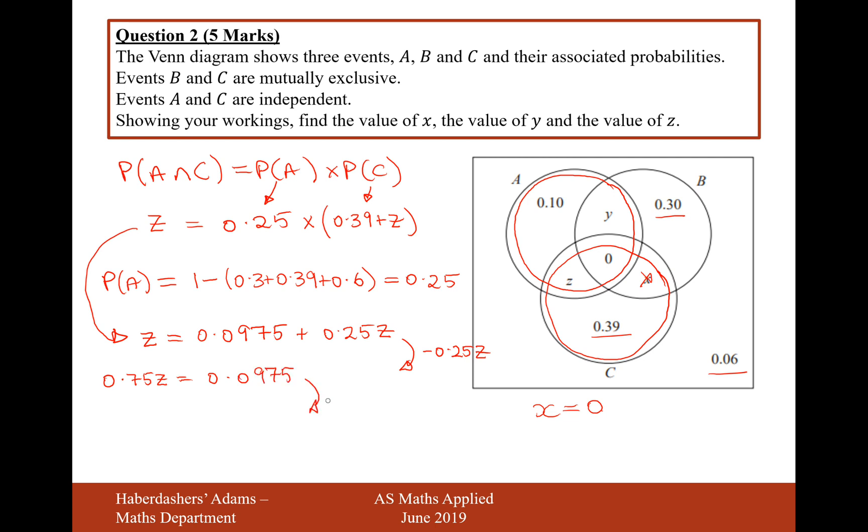And now we'll divide both sides by 0.75. So therefore, Z is going to equal 0.0975 divided by 0.75 gives us 0.13. So the value of Z is 0.13.